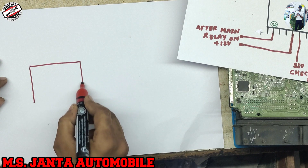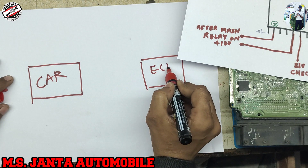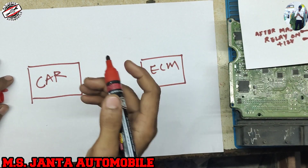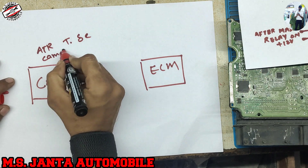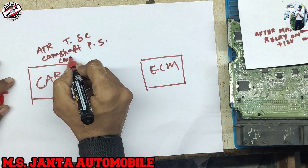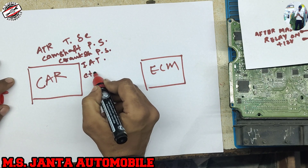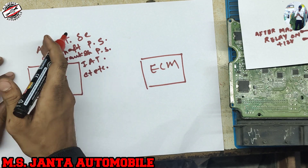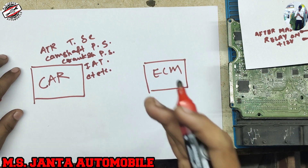For example, here we have a car, and the car has many installed sensors like air temperature sensor, camshaft position sensor, crankshaft position sensor, IAT sensor, etc. An electrician can trace out from the sensor to the ECM.